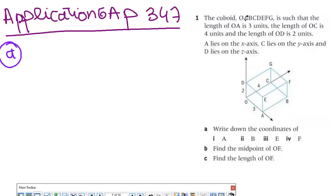The cuboid OABCDEFG is such that the length of OA is 3 units, OC is 4 units, and OD is 2 units. A lies on the X axis, C on the Y axis, and D on the Z axis. The first question is to write down the coordinates of all points. If I want to find the coordinate of A, where is A? A is on the X axis, so Y is zero and Z is zero. The distance between O and A is 3 units, so it's (3,0,0).